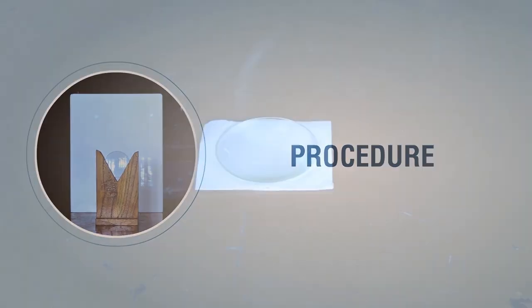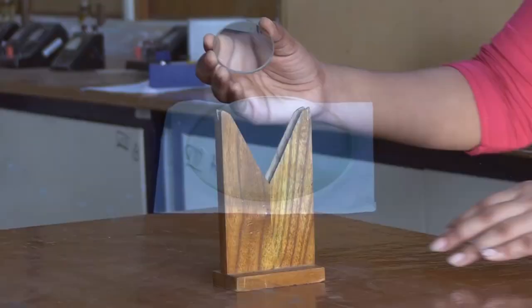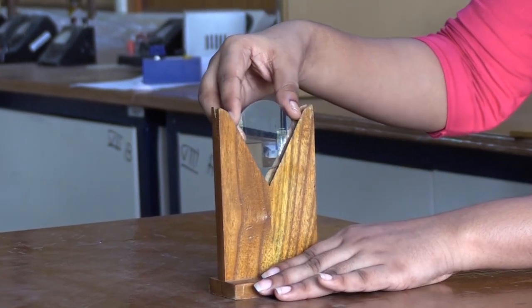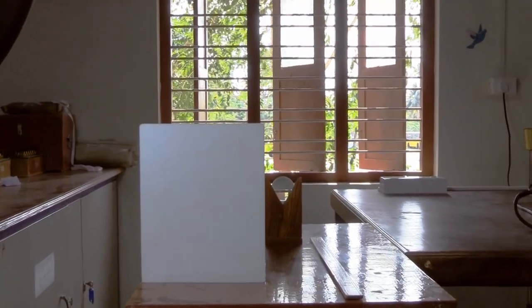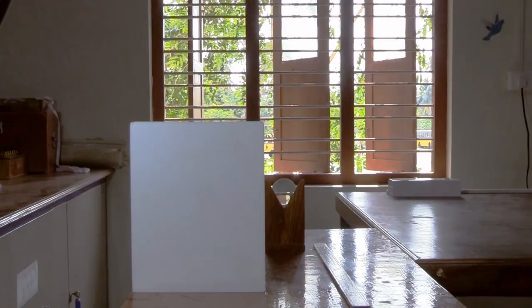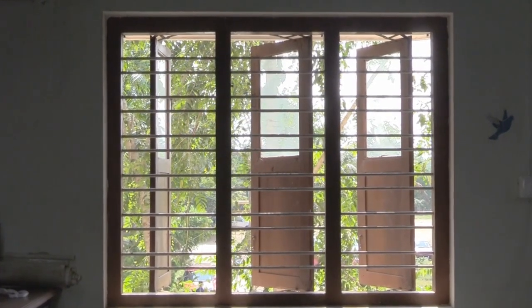Procedure: Take a thin convex lens. Place the convex lens vertically on a lens holder kept on a table. The lens should face a distant object outside the window - a tree or an electricity pole or a distant building.